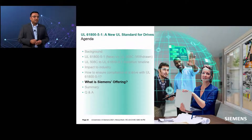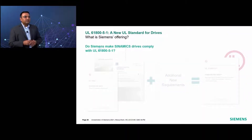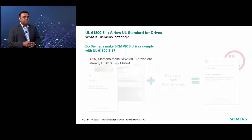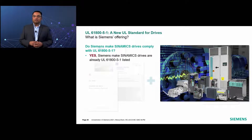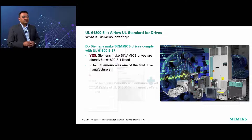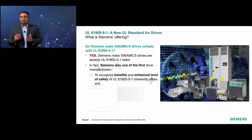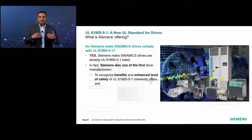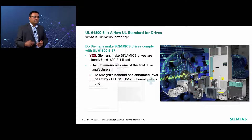Now let us see what Siemens is offering using its state-of-the-art Synamics low voltage drive portfolio. Do Siemens Synamics drives comply with UL 61800-5-1? The answer is yes — the second generation Synamics low voltage drives are already UL 61800-5-1 listed. In fact, Siemens was one of the first drive manufacturers to recognize the benefit and enhanced level of product safety that 61800-5-1 inherently offers, and saw the value it provides to its users, customers, OEMs, and system integrators.